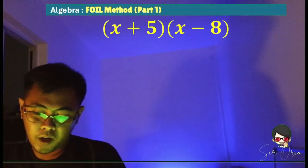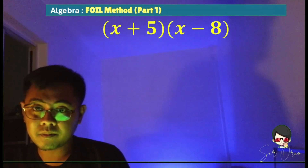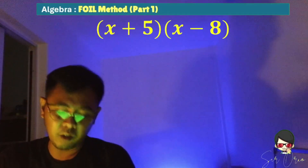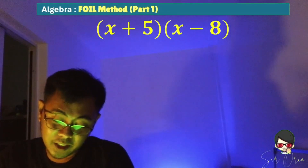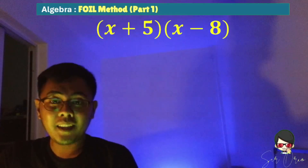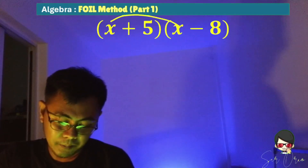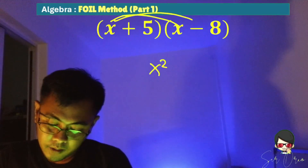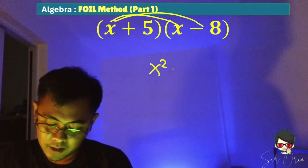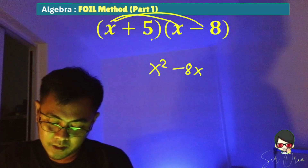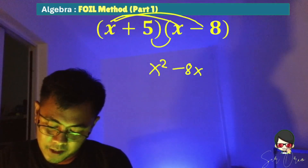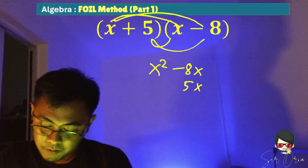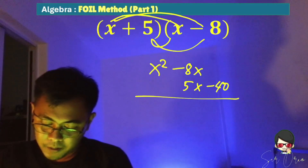Number 3: what is the product of x plus 5 times x minus 8? Applying the FOIL method — first term times first term, x times x, that is x squared. Then x times negative 8, that is negative 8x. Then 5 times x, that is positive 5x. And 5 times negative 8, that is negative 40.